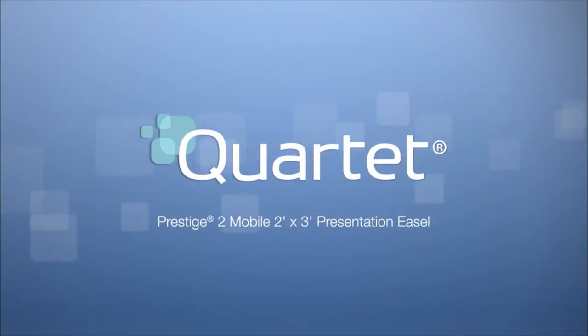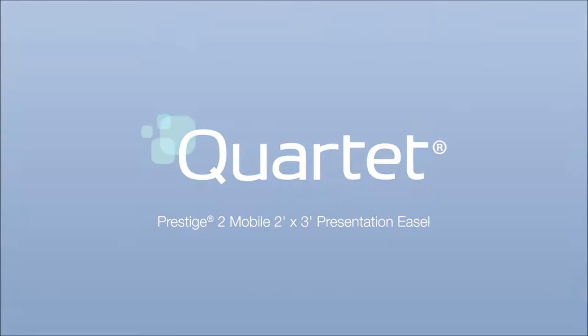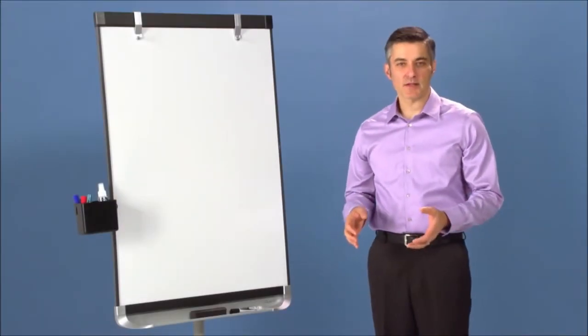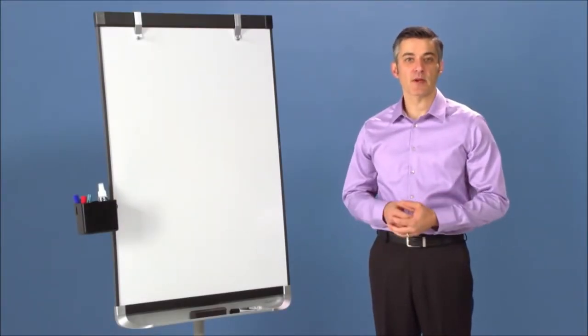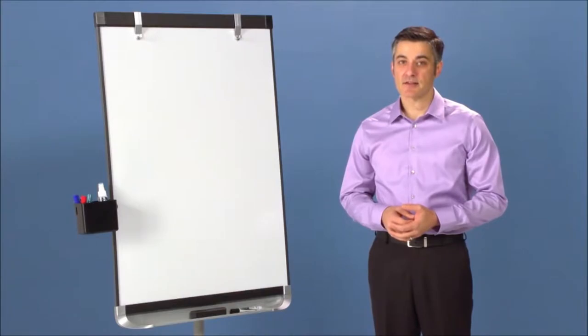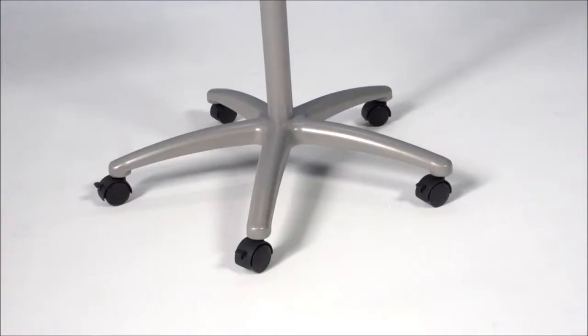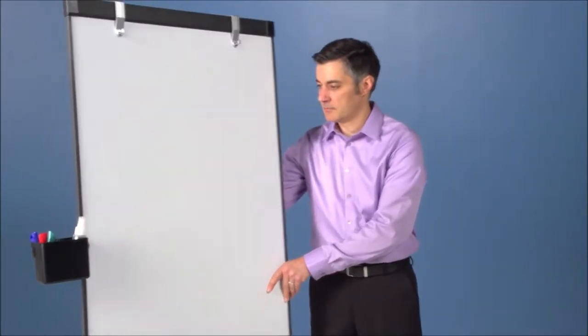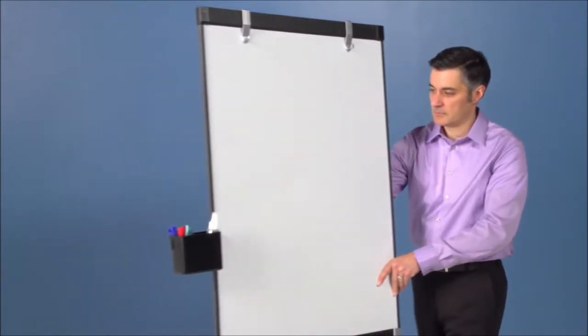Quartet Prestige II mobile 2x3 foot presentation easel. This elegant mobile presentation easel is not only built for ease of use, it's built to last under heavy use. It sits on a five caster base for quick movement throughout the office with Konex accessories still attached.